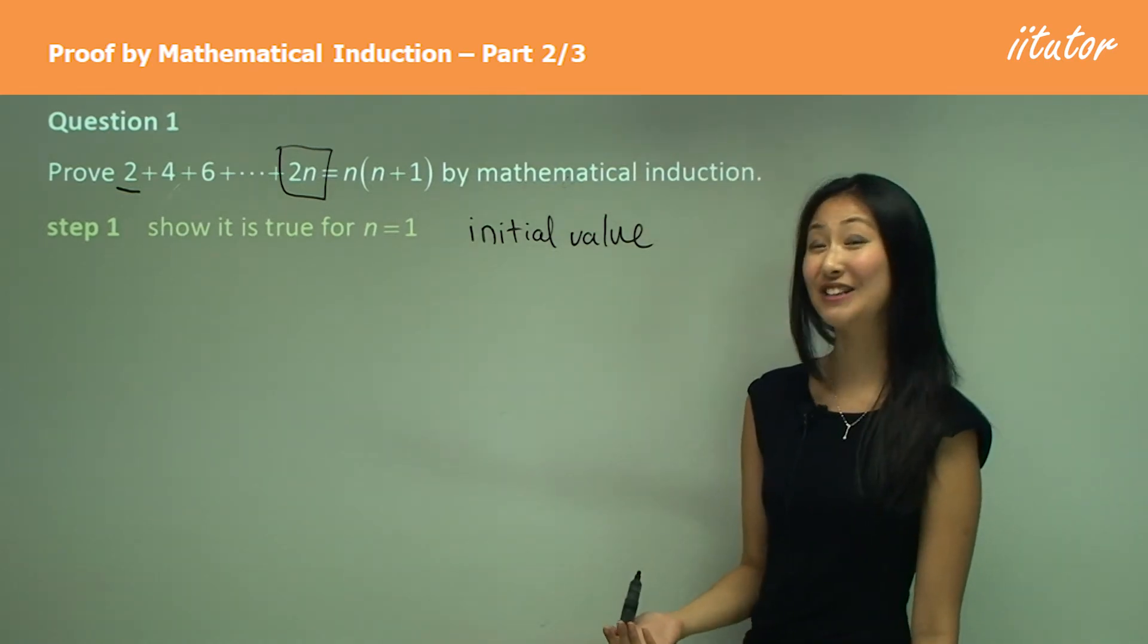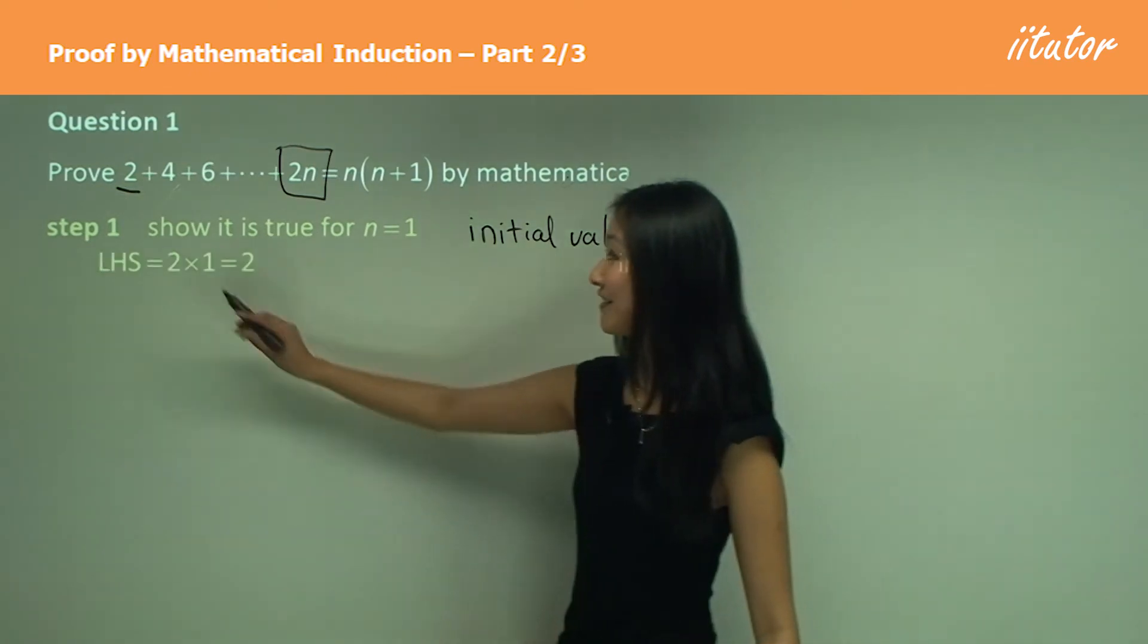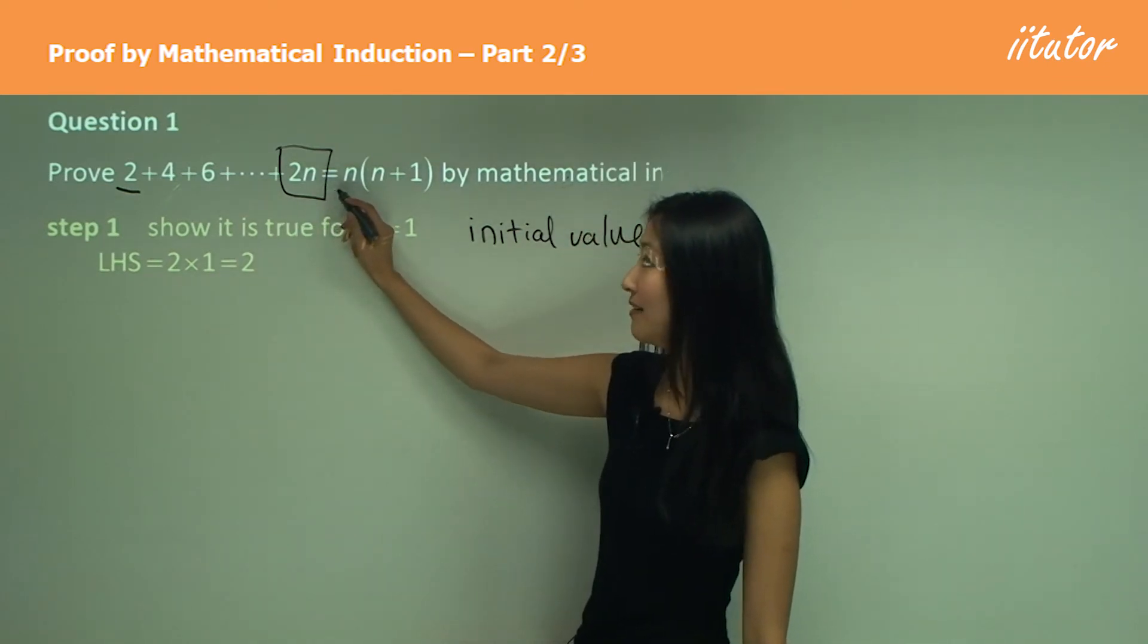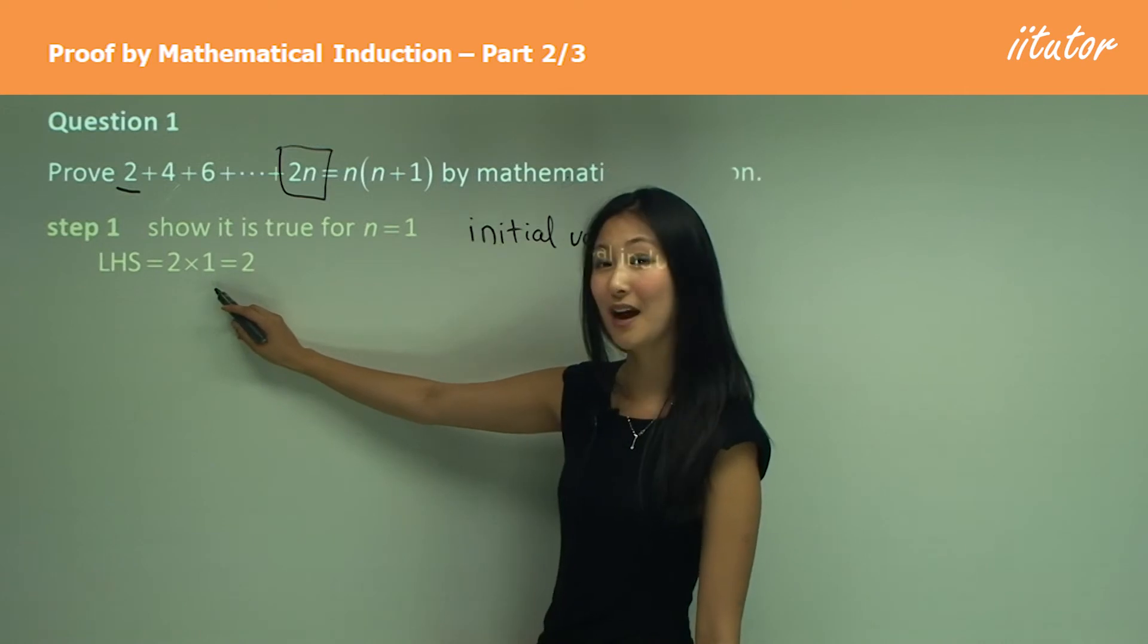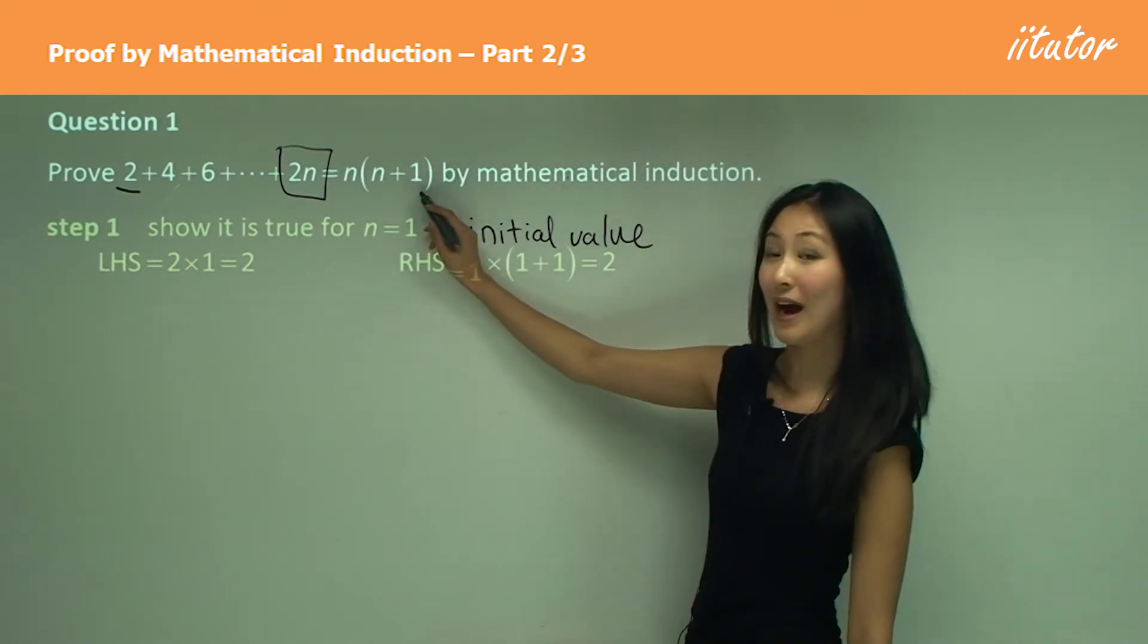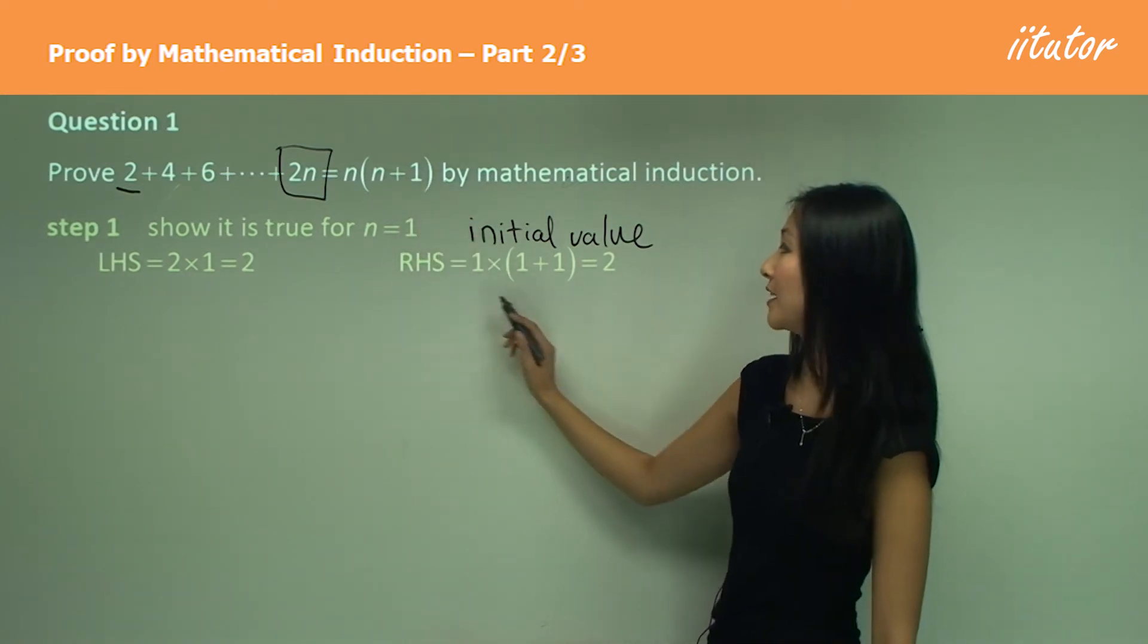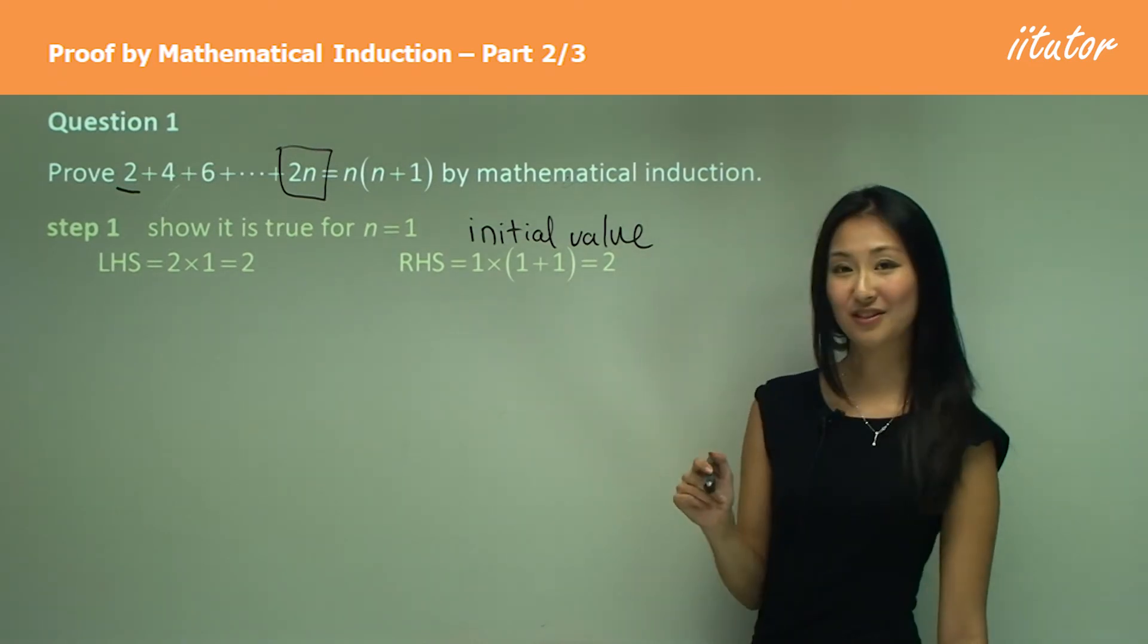Alright, so how do we show it's true for n equals 1? Well, for all proofs we start off with the left hand side. Using the general formula we have 2 times n equals 1, so 2 times 1 equals 2. Then we look at the right hand side, which is n times n plus 1, so that's going to be 1 times 1 plus 1, which also equals 2.